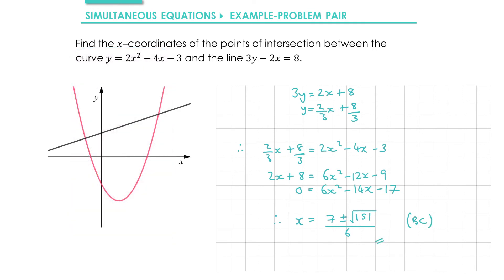The question doesn't ask us to but it might be nice just to illustrate what these mean on the graph. So if I take my first point of intersection here and I draw a vertical line downwards, the x-coordinate here would be 7 minus root 151 over 6. And if I take my second point and draw a line downwards, I get the x value of the second solution which is 7 plus root 151 over 6.